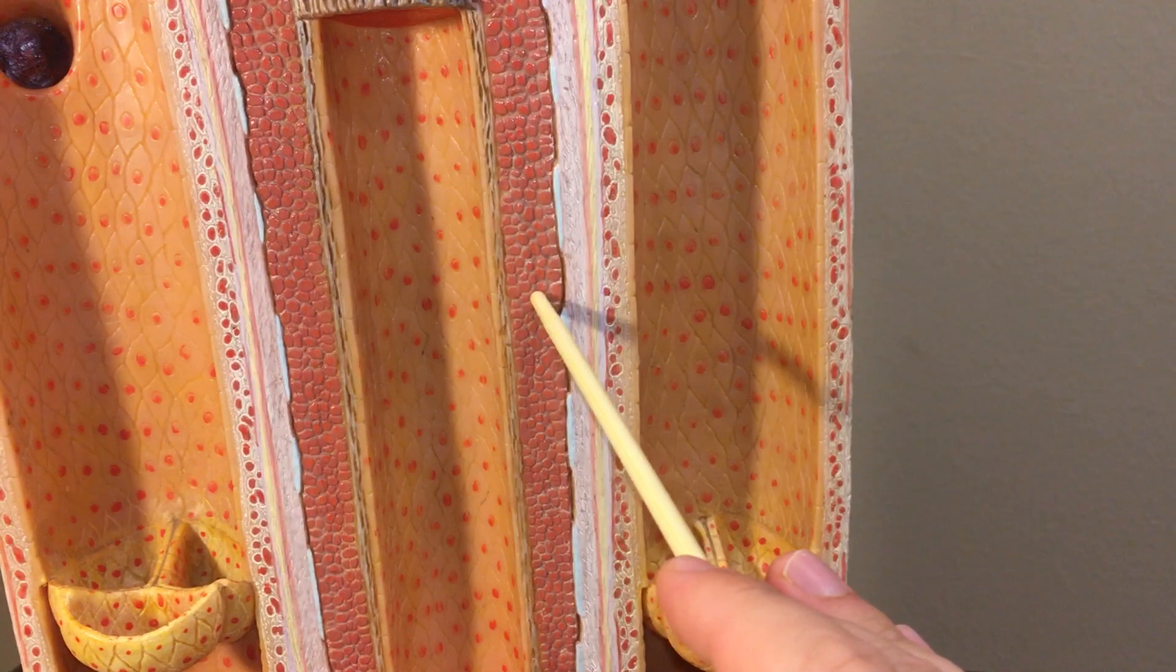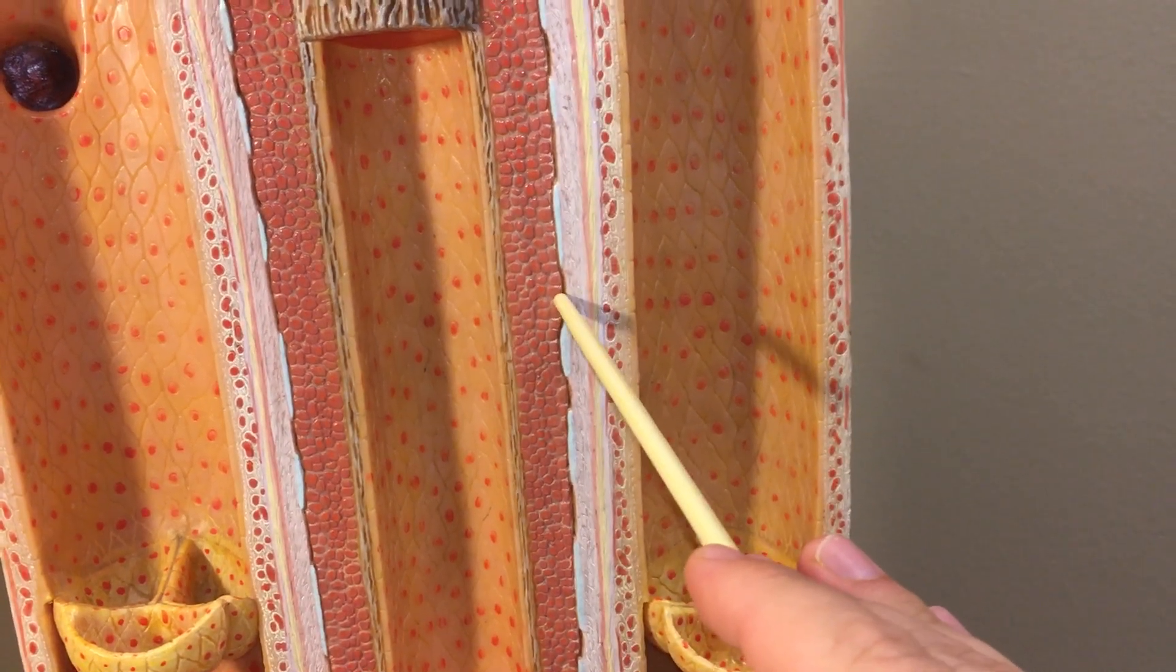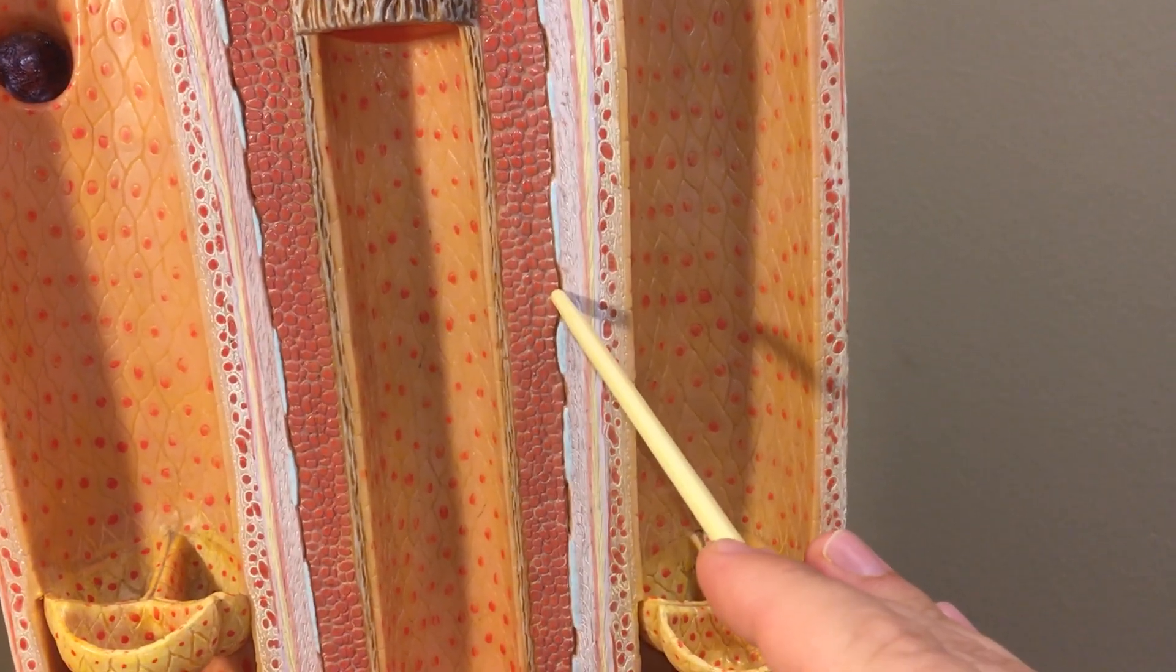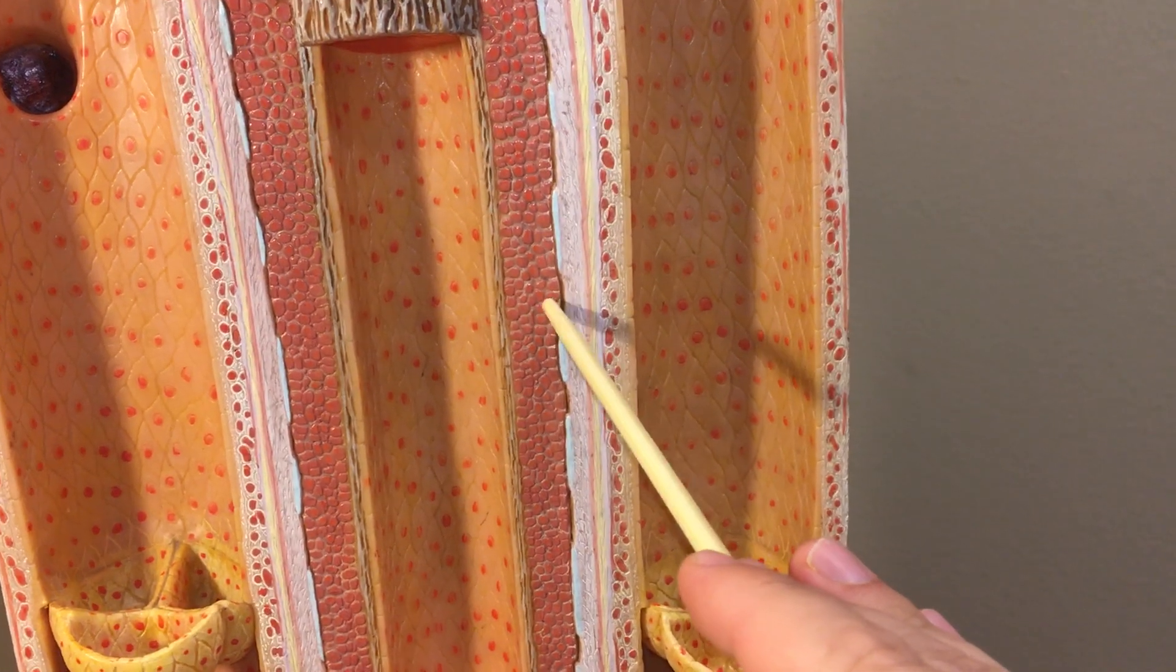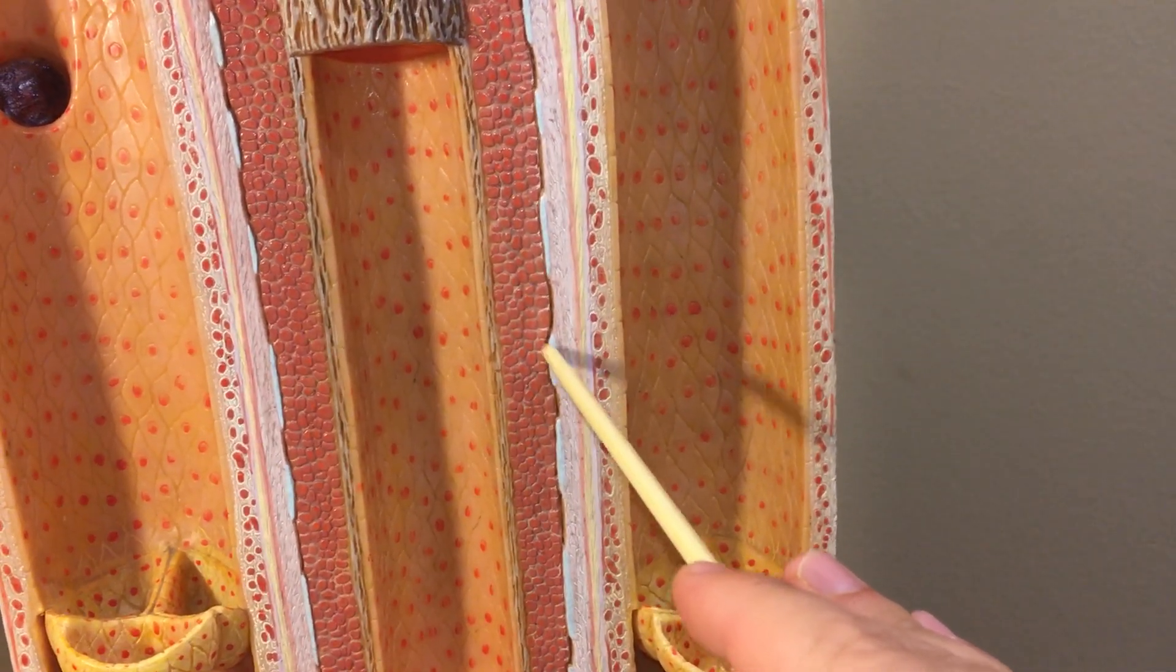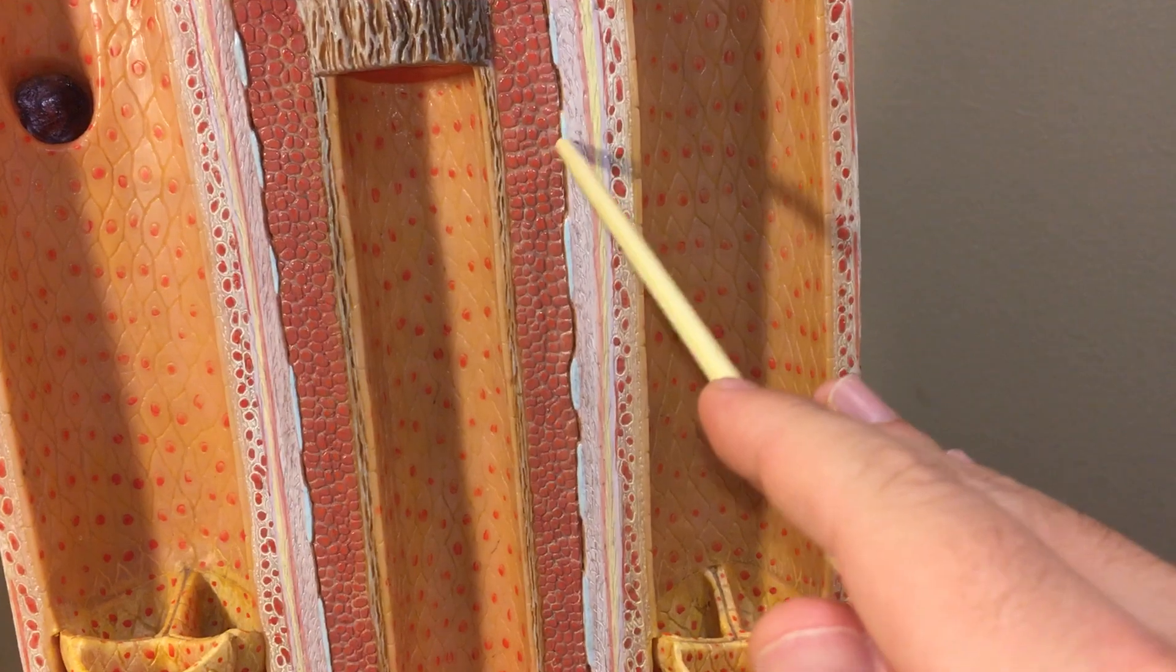And just going superficial to that, then we're now entering the tunica externa, and it'll have an external elastic membrane, that's all this teal right here, this light blue.